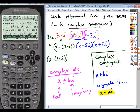So find your zeroes, find the complex conjugate pairs, and then set up your factors based on those zeroes, expand them out, and that gives you your solution.